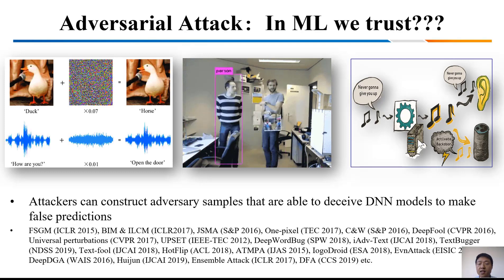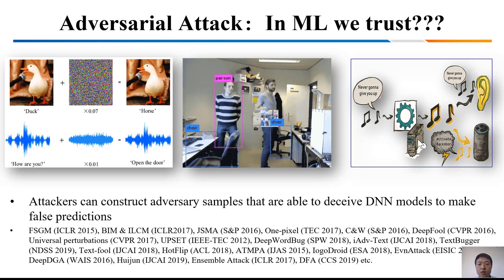Nowadays, attackers can easily construct adversarial examples to deceive DNN models to make false predictions. With adversarial examples, what the machines see and what machines hear might not be true. There are lots of research works in these areas. We can see many adversarial attack papers in machine learning and AI top conferences. Just like the name of this session: in machine learning, do we need to trust?